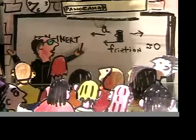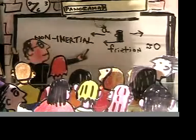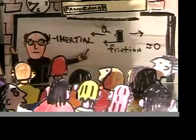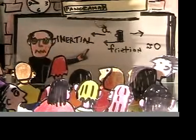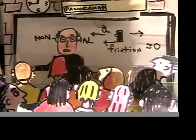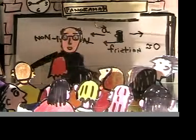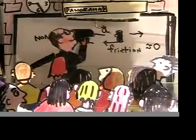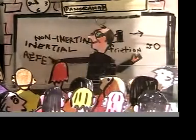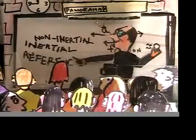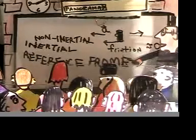Which would be a non-inertial reference frame? In this frame, a fictitious force would be introduced. On the ground — an inertial reference frame — an observer would simply say that the mug continues traveling at the velocity the plane had before the plane accelerated.